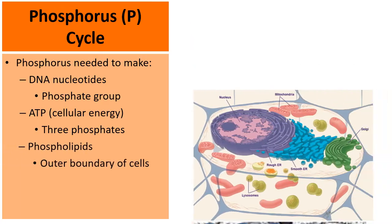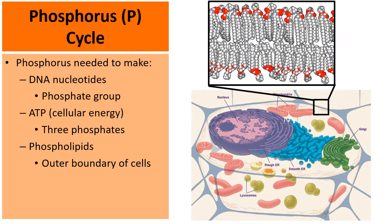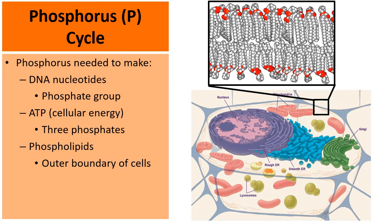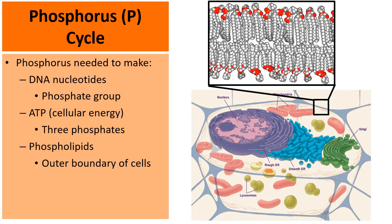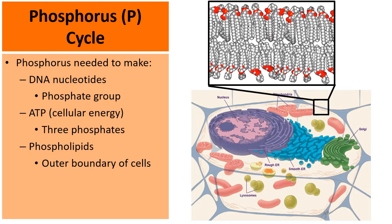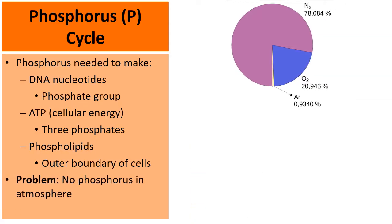Here's a diagram of a cell. The outer boundary is the cell membrane. When you zoom in, the cell membrane is called a phospholipid bilayer — 'phospho' as in phosphorus. So there's phosphorus in the very boundary of every cell in our bodies. We need phosphorus, but there's a problem.